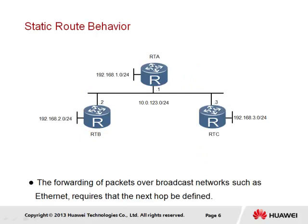Another factor of static route behavior to consider is in the case of multi-access networks, in which multiple next hops exist. Taking the example involving routers RTA, RTB, and RTC, each router is associated with the same 10.0.123.0 network — a transit network via which other networks are reached. For traffic originating from 192.168.1.0 or 192.168.3.0 and destined for 192.168.2.0 behind RTB, the next hop must be defined to ensure the correct forwarding path. If the outbound interface were specified instead, the packet forwarding would be subjected to multiple next hops, since the network 192.168.2.0 could be reachable via 10.0.123.2 or 10.0.123.3.